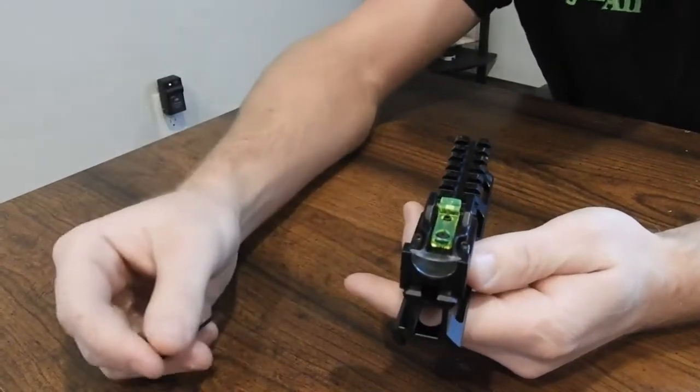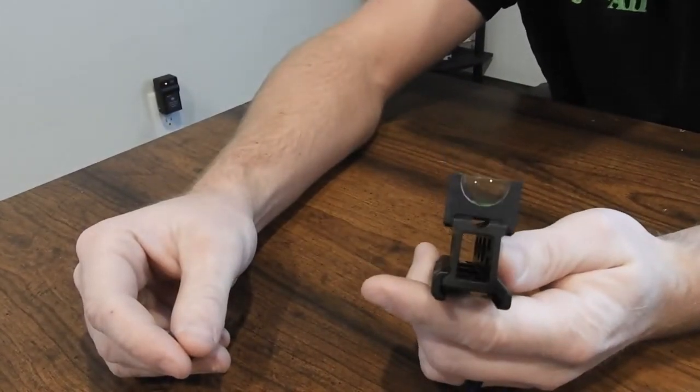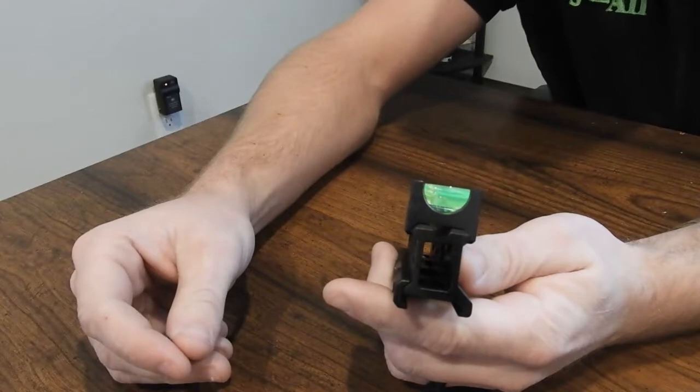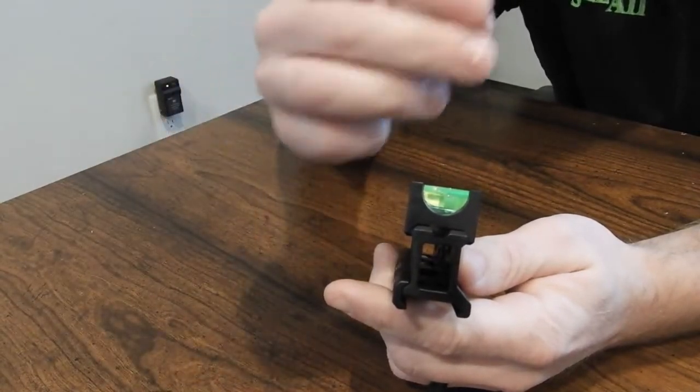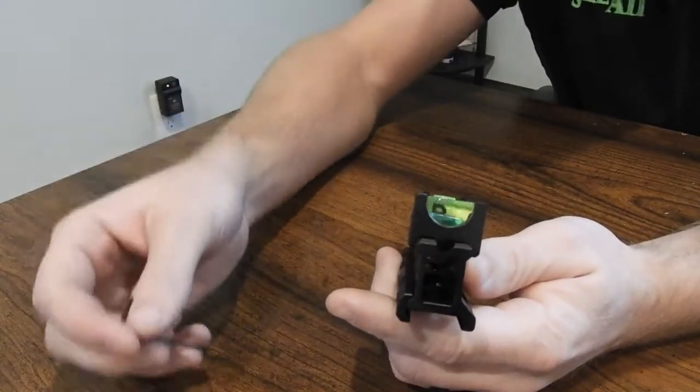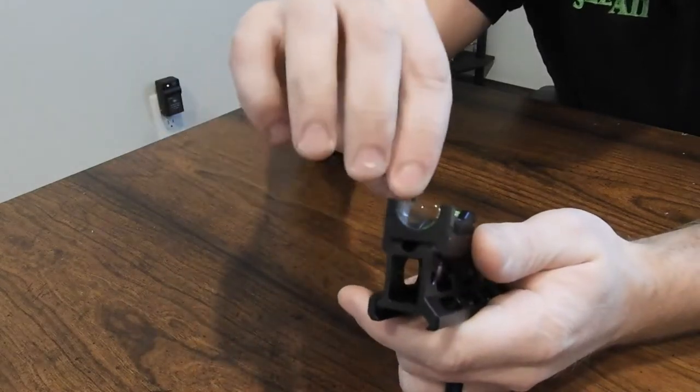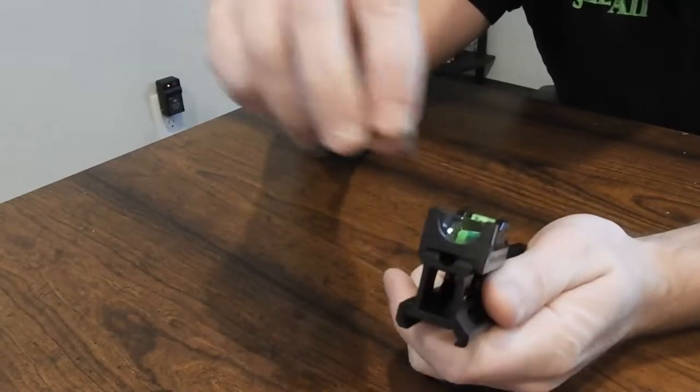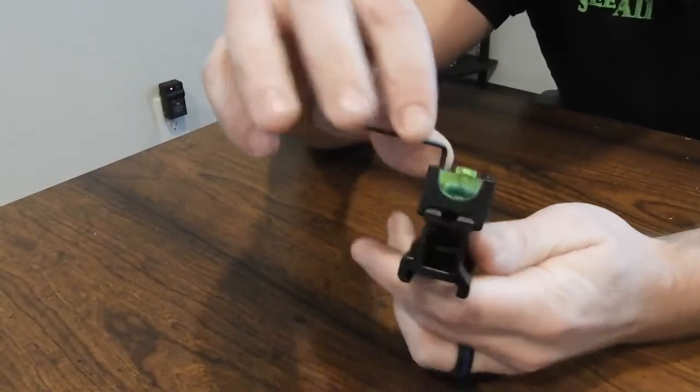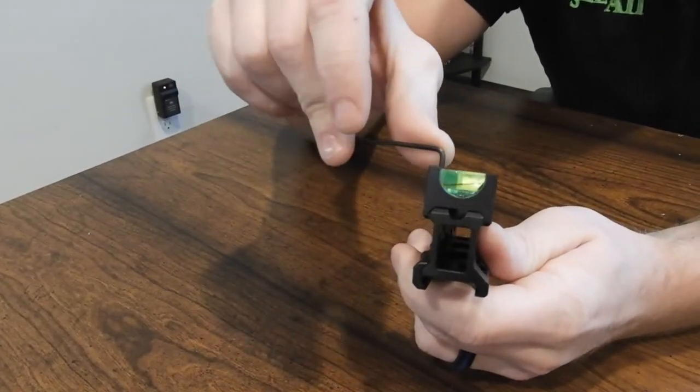And then you're going to want to evenly tighten these so your sight is sitting flat on the rail. If you just tighten one all the way down then the other one, it could camp the sight a little bit. So just evenly tighten them and then you're going to just want to snug them. You'll put the small part of the Allen wrench in and then just get them snug.